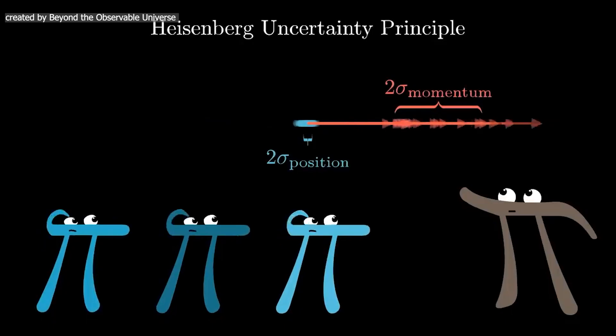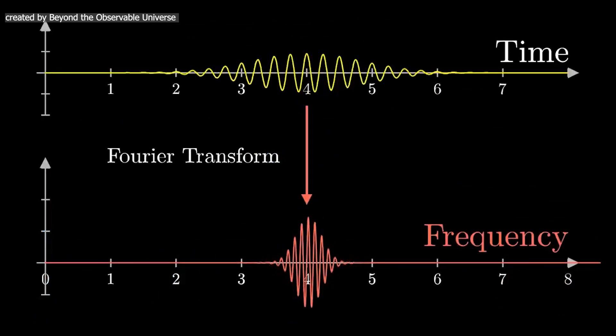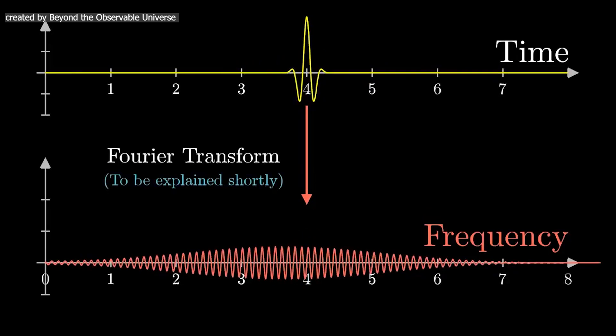The uncertainty principle reveals that there is an inherent limit to the precision with which we can simultaneously measure certain pairs of properties. The more we know about one, the less we know about the other.